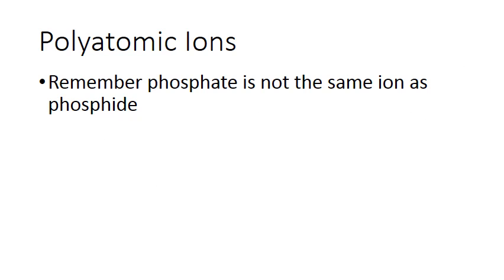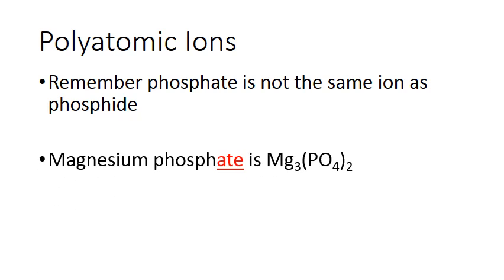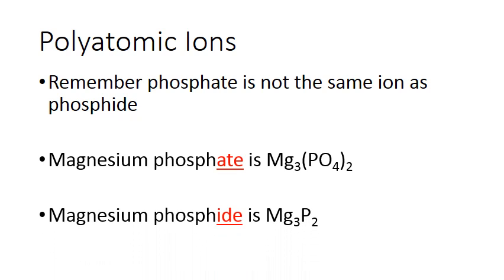Remember that phosphate is not the same ion as phosphide. Magnesium phosphate is Mg3(PO4)2, but magnesium phosphide is just magnesium and phosphorus together: Mg3P2. Whenever you see -ate at the end, it's going to be a polyatomic ion. Whereas -ide is always just an element. Good thing to remember for a test.